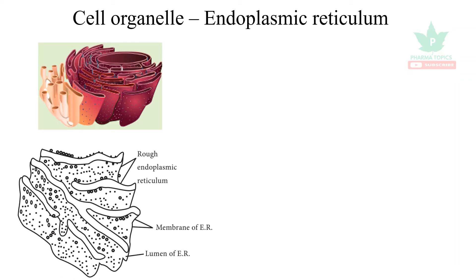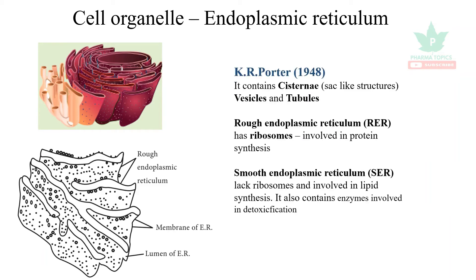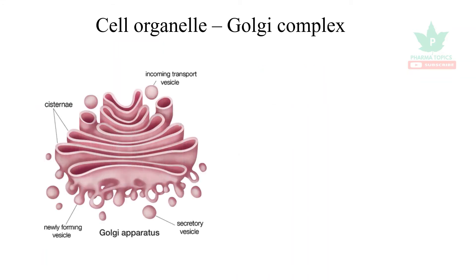The first organelle is the endoplasmic reticulum, which has two types: rough endoplasmic reticulum and smooth endoplasmic reticulum. The first scientist to describe this was K.R. Porter in 1948. He described the portions as cisternae, vesicles, and tubules. Rough ER contains ribosomes and is involved in protein synthesis. Smooth ER is concerned with lipid synthesis and detoxification.